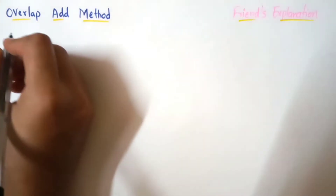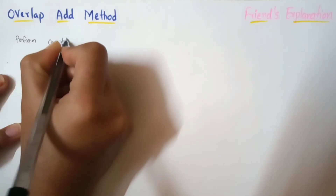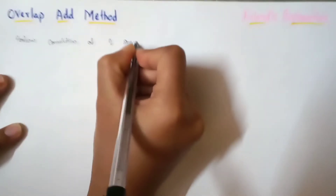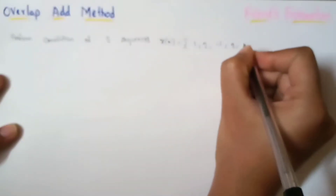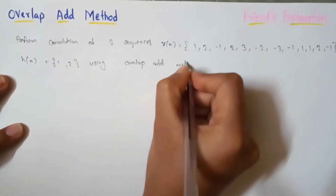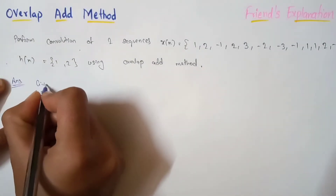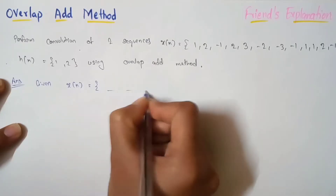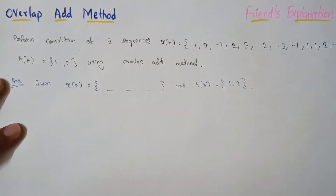The question is: to perform convolution of two sequences — x(n) is a very long sequence — using the Overlap-Add method. Given data: x(n) is the long sequence and h(n) is equal to [1, 2].